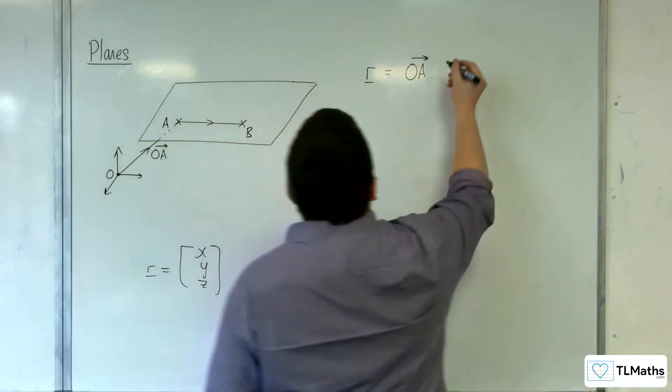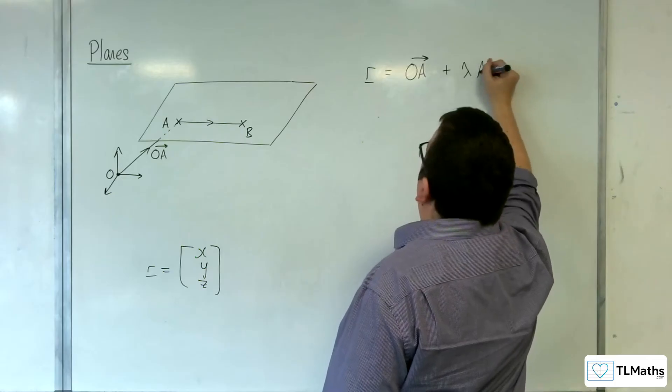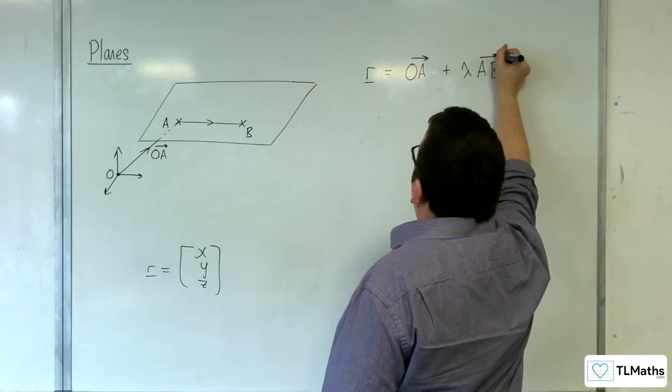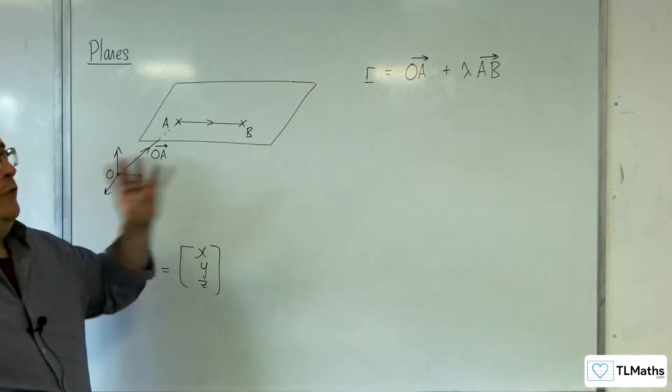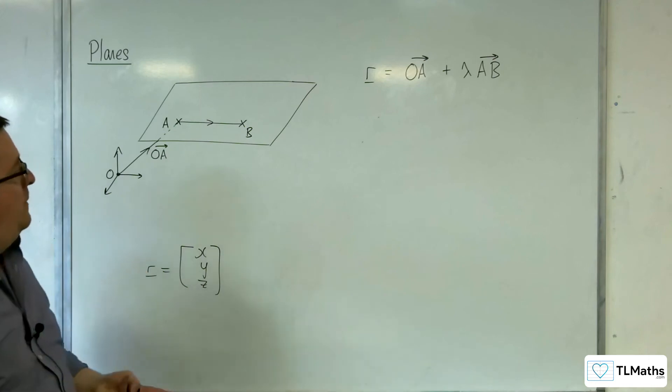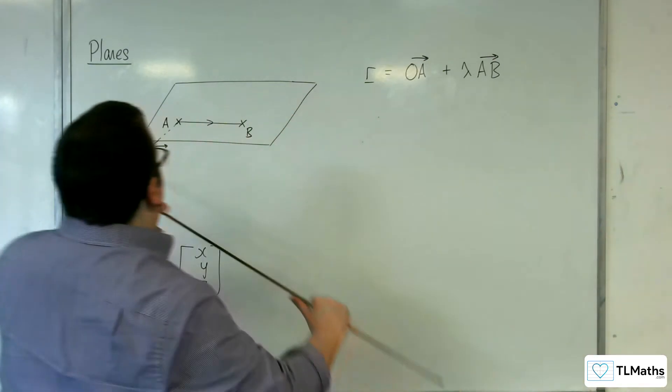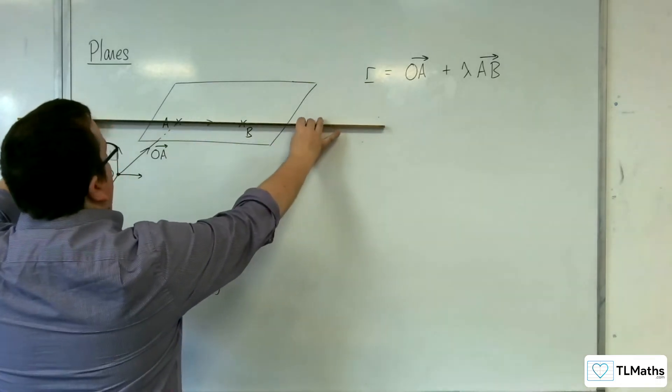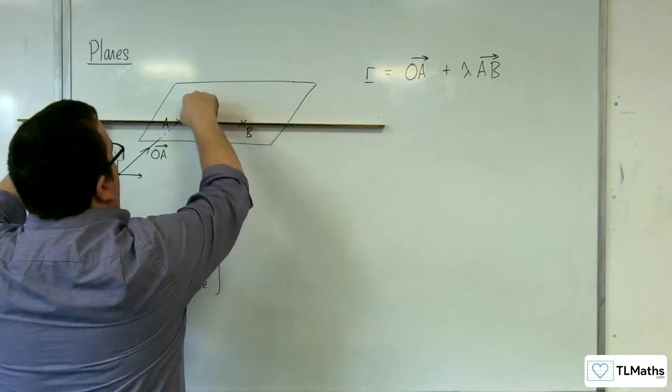So I want any multiple, so let's say lambda lots of AB. Now that's not good enough, because all that will do is it will allow me to get onto any point that is on that line, but not off the line somewhere else on the plane.